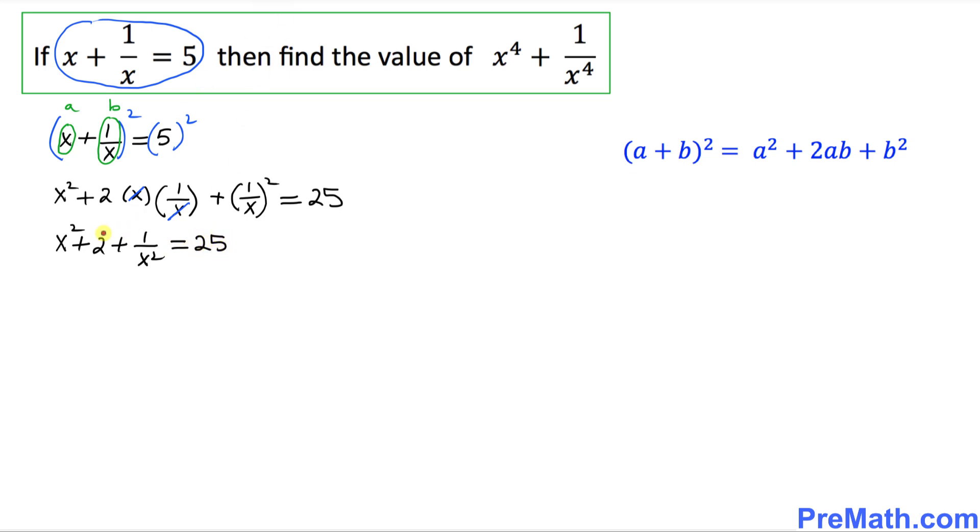Let's move this 2 on the other side. So we're going to be left with x squared plus 1 over x squared on the left hand side, and we got 25 on the right hand side. When you move this 2 on the other side it becomes negative 2, so we simply end up with x squared plus 1 over x squared equals 23.